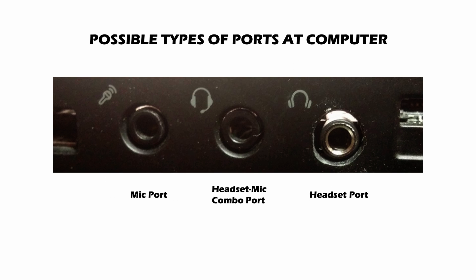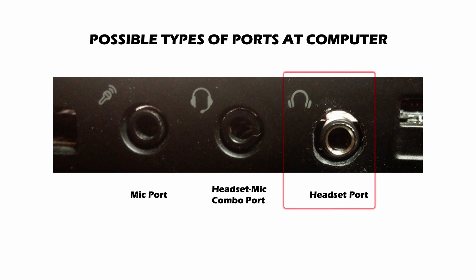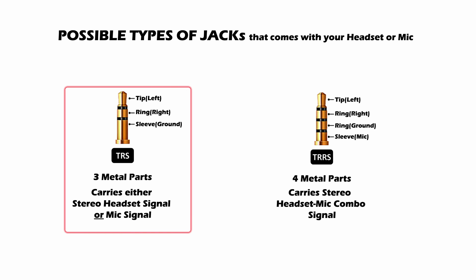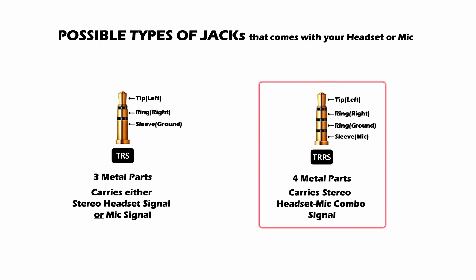What you see here are the possible types of ports at a computer: a dedicated mic port, a dedicated headset port, and a headset mic combo port. These are the possible types of jacks that come with your headset or mic: a TRS jack with 3 metal parts, and a TRRS jack with 4 metal parts.